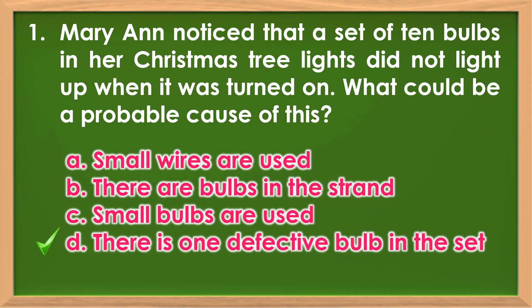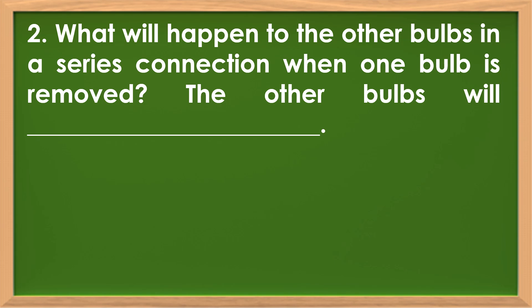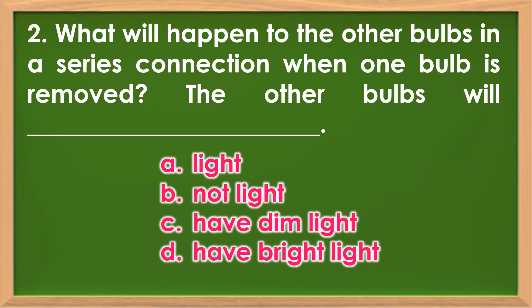Very good, the answer is letter D. Number 2: What will happen to the other bulbs in a series connection when one bulb is removed? The other bulbs will — A. Light, B. Not light, C. Have dim light, D. Have bright light. Very good, the answer is letter B.